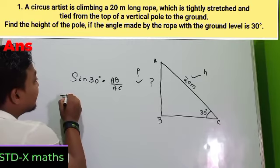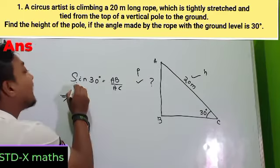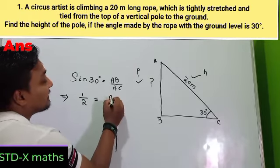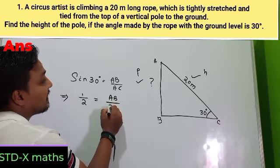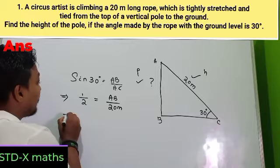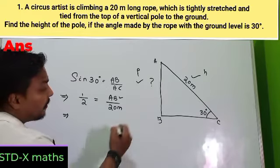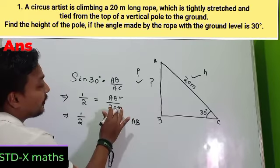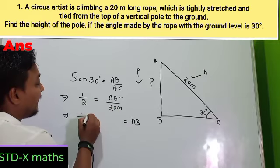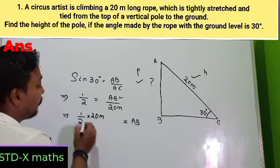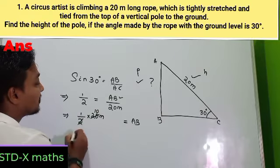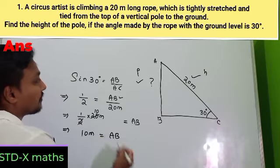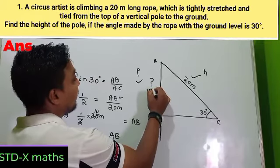In the next step, put the values: sin 30° = 1/2, AB is unknown, and AC = 20 meters. So 1/2 = AB/20. I want AB, so AB = 20 × (1/2) = 10 meters. Finally, AB = 10 meters. The formula is working perfectly!